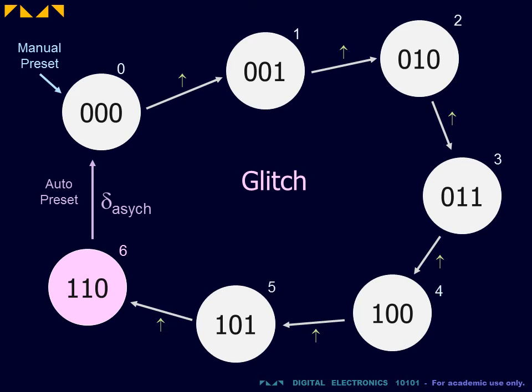Note that there will be a glitch during this truncation process. The transient 110 state will last for the propagation delay of the asynchronous reset function.